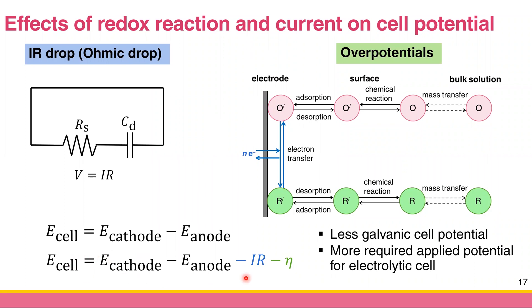The effect of the ohmic drop and overpotential is that your cell potential is now modified by these two terms: E_cell = E_cathode − E_anode − IR (from the ohmic drop) − eta (from the overpotential). The result is you get less governing cell potential, and you need more applied potential for the electrolytic cell. For example, if a reaction needs 1 volt, you might have to apply 1.2 volts, or in a galvanic cell you might only get 0.7–0.8 volts.